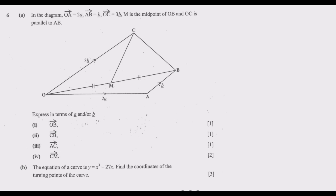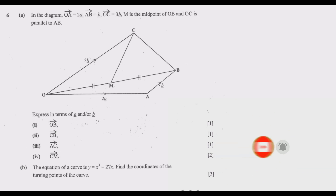Question 6: In the diagram, OA equals 2 vector a, AB equals vector b, OC equals 3 times vector b. M is the midpoint of OB, and OC is parallel to AB. Express in terms of vector a and/or vector b: (i) OB, (ii) CB, (iii) vector AC, (iv) vector CM. Part B: given the equation of a curve y equals x cubed minus 27x, find the coordinates of the turning points.